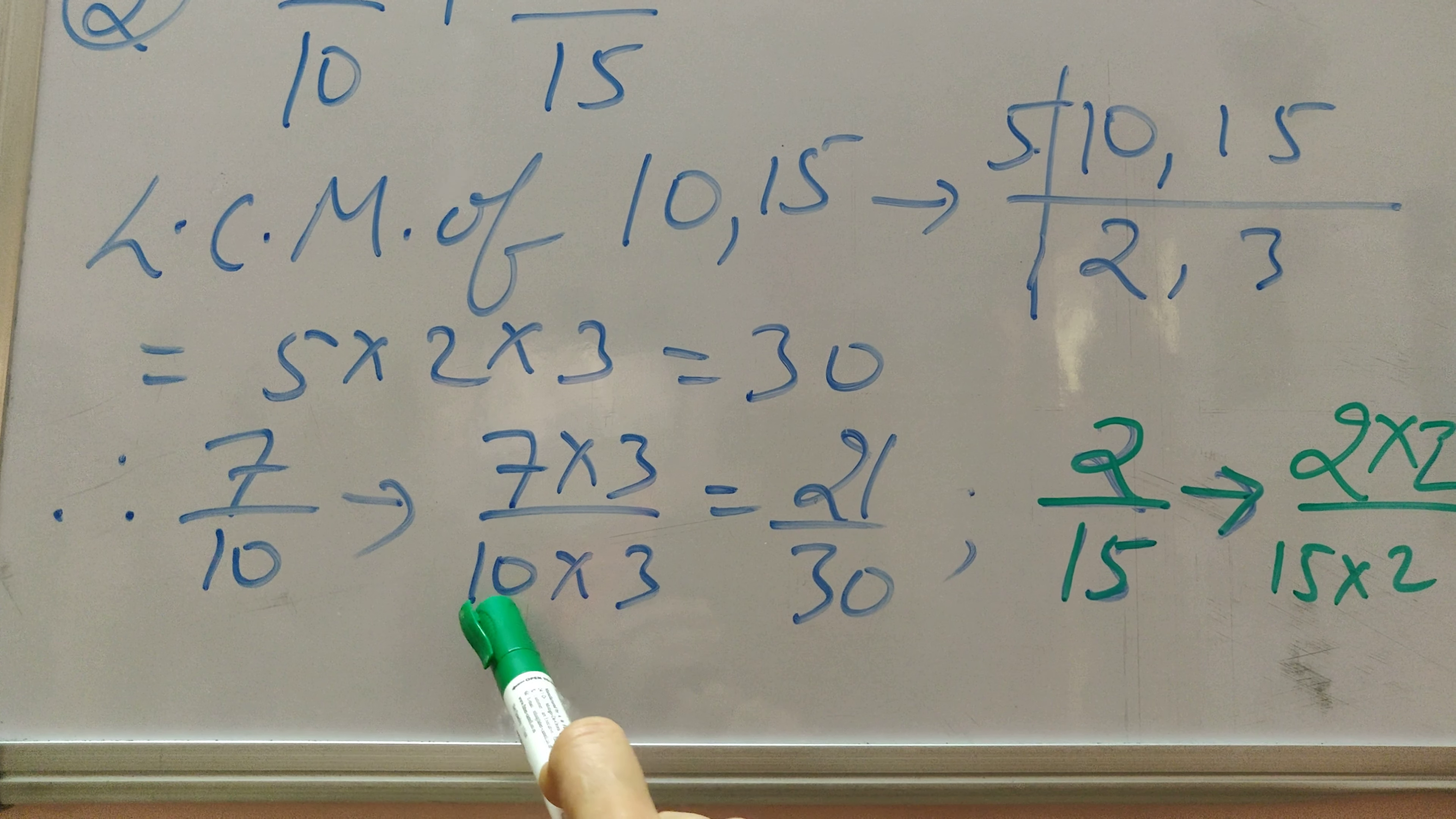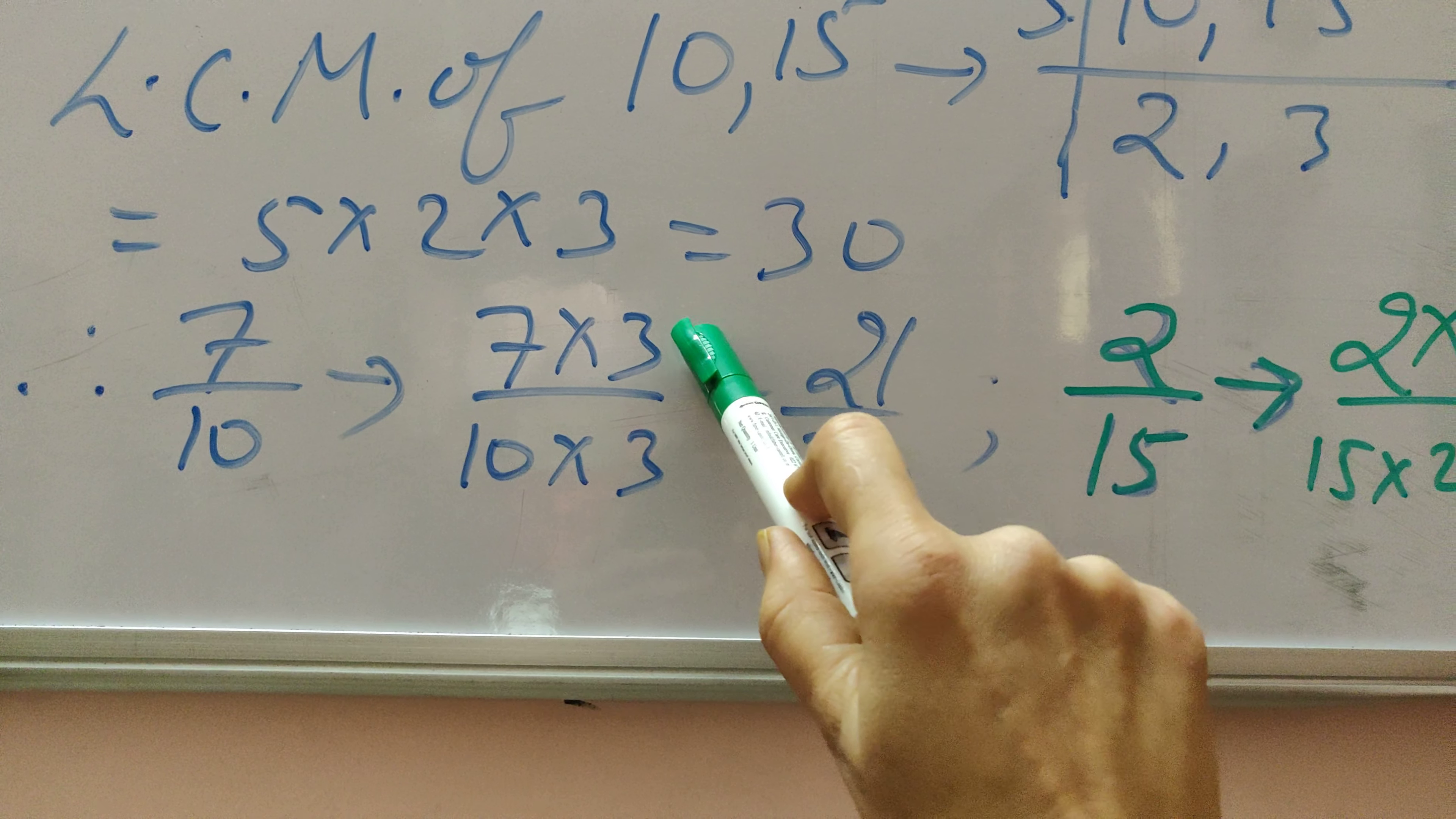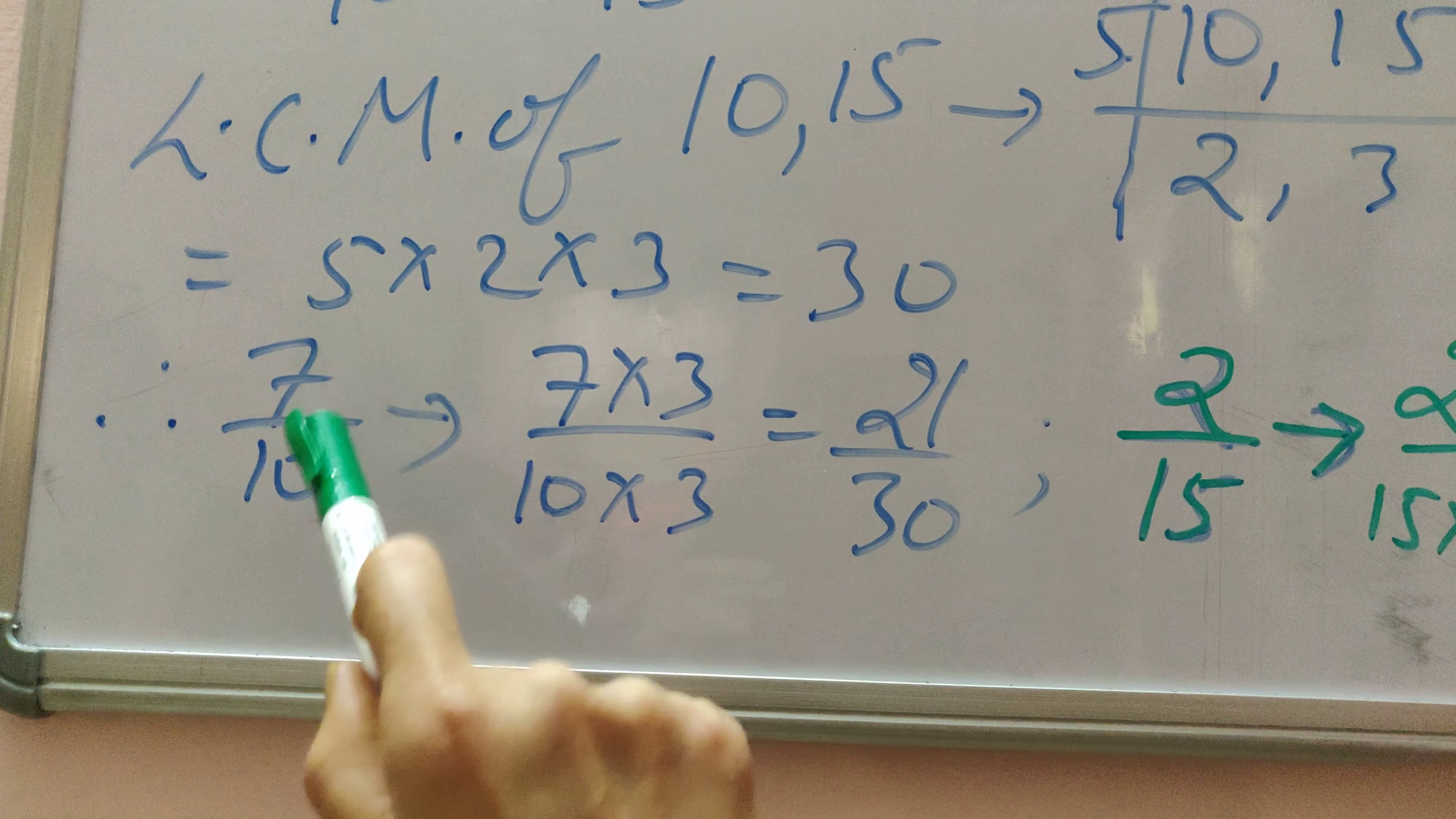So what we will do is 10 into 3 to get 30. We can multiply 3 to both the top and bottom of 7 by 10, that is the numerator and denominator, both we will multiply with 3. So we will get 7 into 3, that is 21, and 10 into 3, that is 30. So 21 by 30 will be equivalent to 7 by 10.